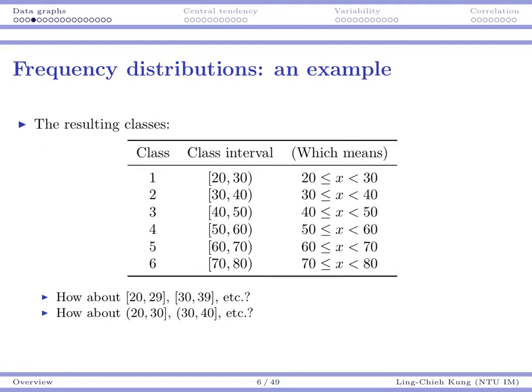So 30 belongs to class 2 instead of class 1. The really important point here is we need to make sure the classes do not overlap, especially at class endpoints. When we define our class intervals, we need to make sure things are clear enough.